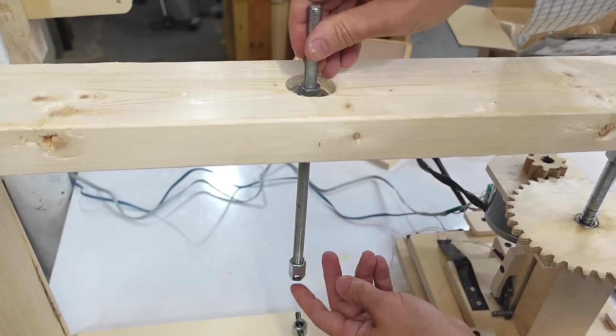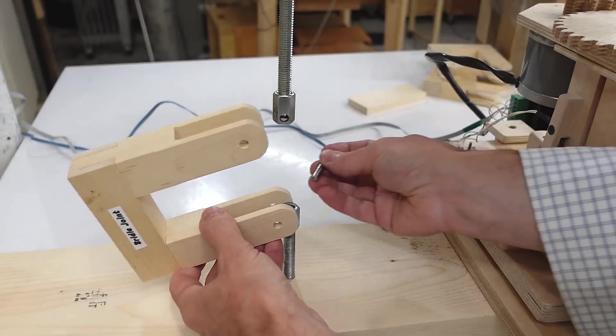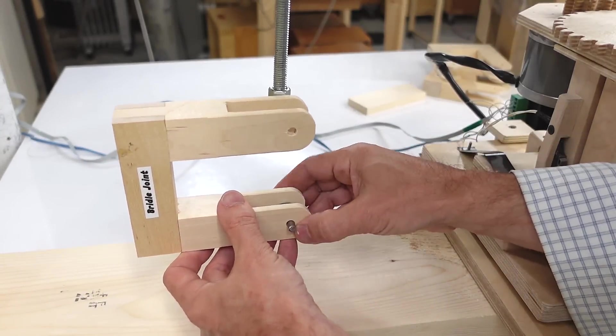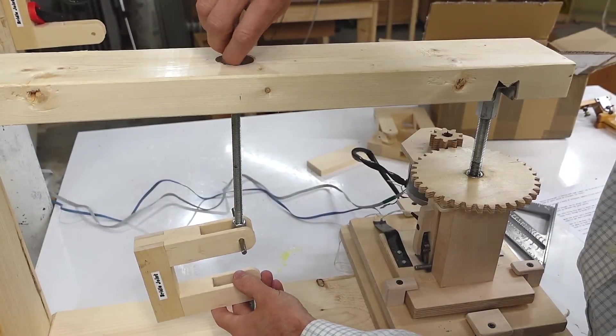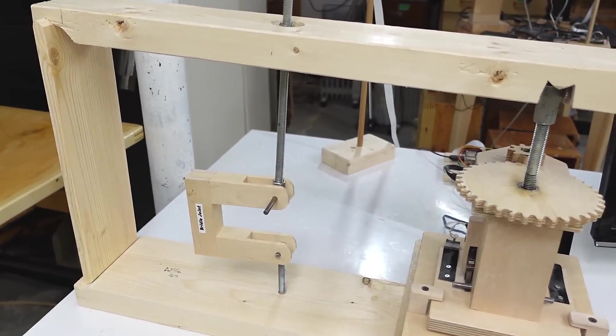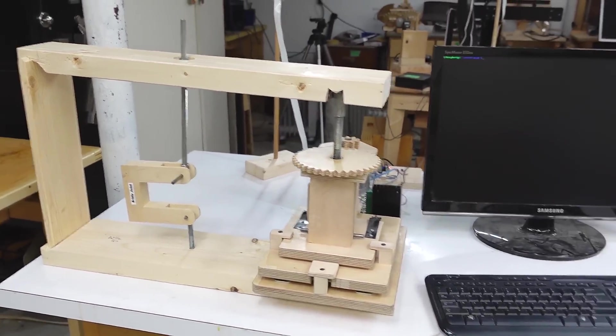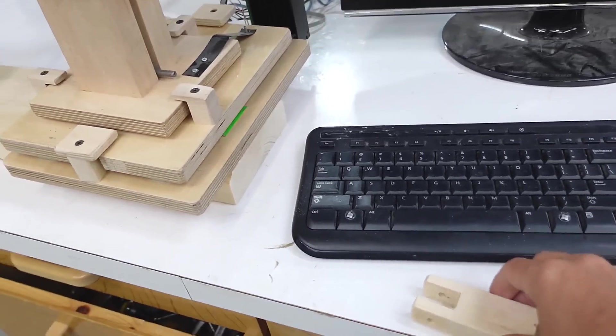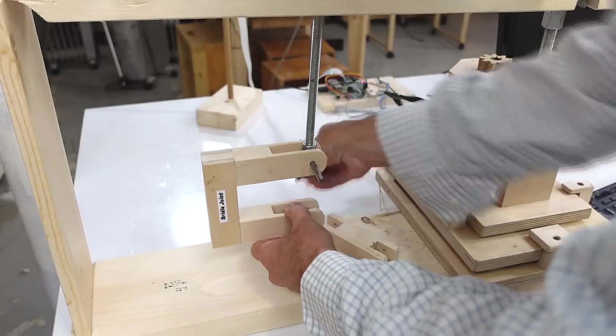Also with a coupler nut on the end of it. And the test piece goes in here. And I'll just snug that up a bit. Now normally I make a few extra test samples just to set up the test setup with. I don't have that so I'm gonna use a dummy sample just to make sure the setup works.